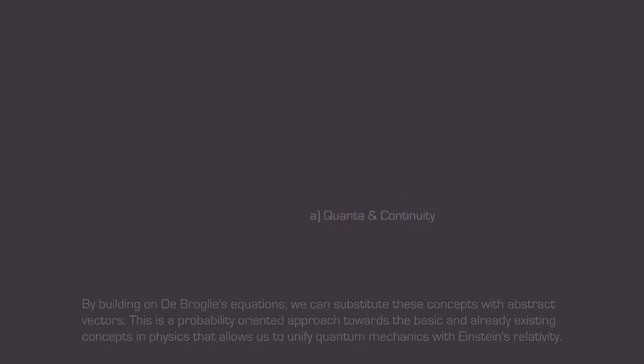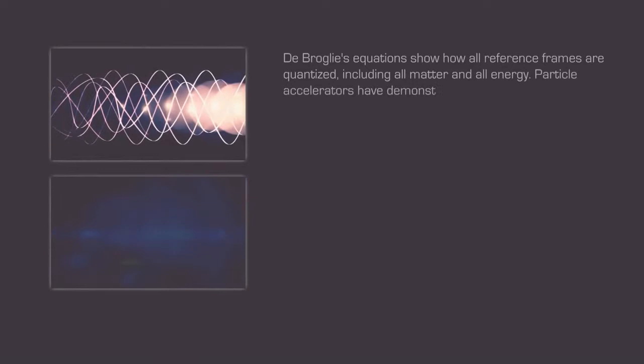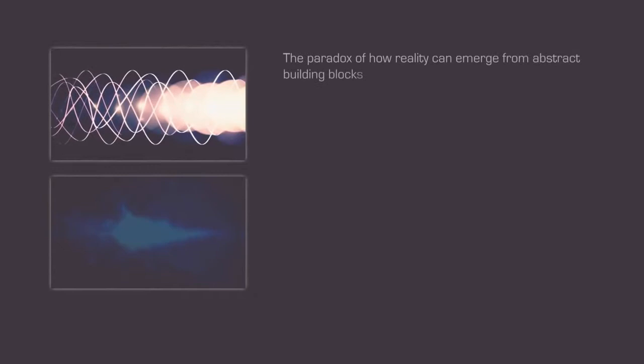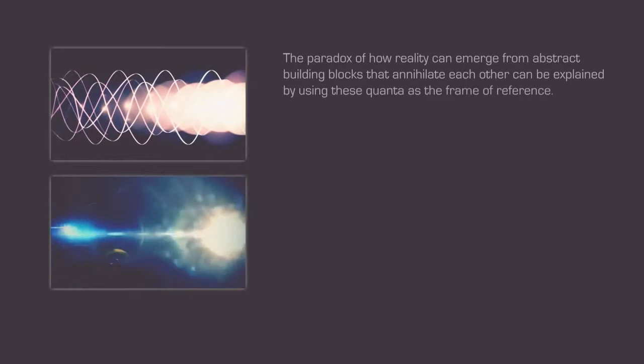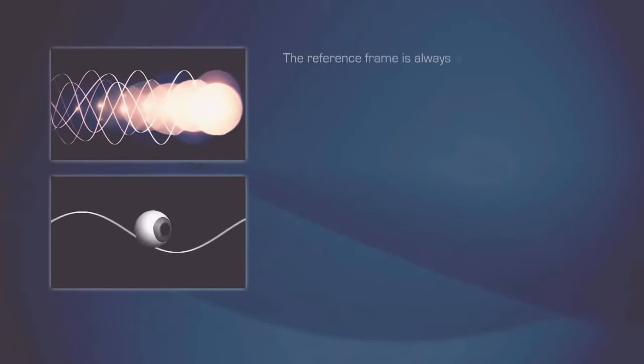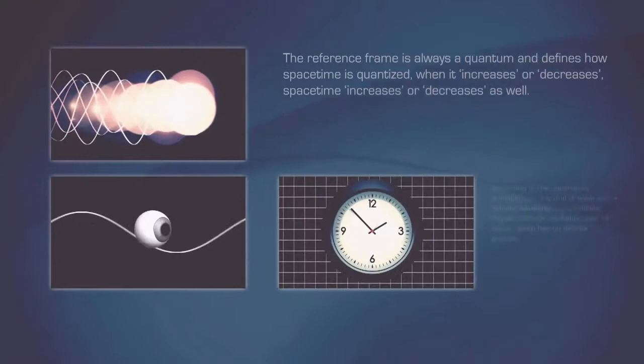De Broglie's equations show how all reference frames are quantized, including all matter and all energy. Particle accelerators have demonstrated that matter and antimatter are always created simultaneously. The paradox of how reality can emerge from abstract building blocks that annihilate each other can be explained by using these quanta as the frame of reference. In a simplified analogy, we need to look at things through the eyes of a photon. The reference frame is always a quantum and defines how spacetime is quantized. When it increases or decreases, spacetime increases or decreases as well.